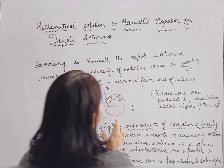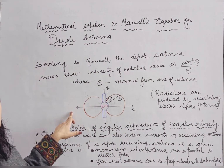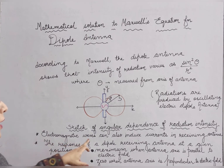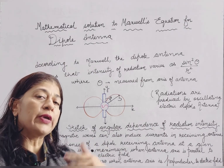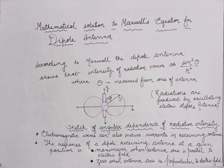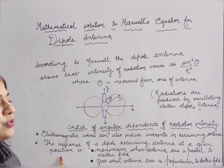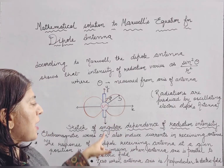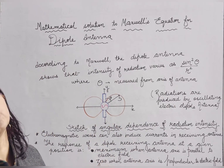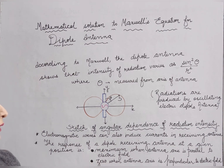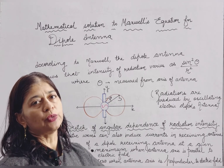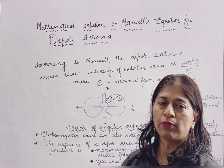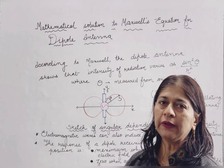This sketch gives the idea of the radiations produced by the oscillating electric dipole antenna connected to an alternating voltage supply, which may be an LC oscillator, and the axis of the antenna from which the angle is measured. We conclude two important things: first, electromagnetic waves can induce current in a receiving antenna on the other side; second, a dipole receiving antenna gives maximum intensity when its antenna axis is parallel to the electric field, and zero when the antenna axis is perpendicular to the electric field.